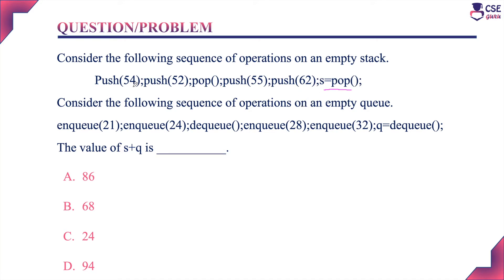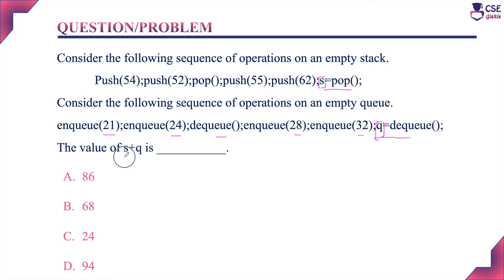Next, consider the following sequence of operations on an empty queue: NQ 21 (NQ means insert), NQ 24, DQ, then NQ 28, NQ 32, and finally Q is equal to DQ. We need to find S plus Q after performing these stack and queue operations.